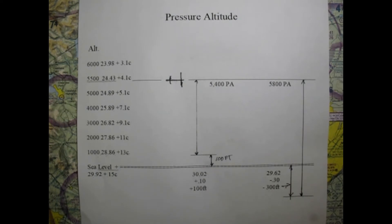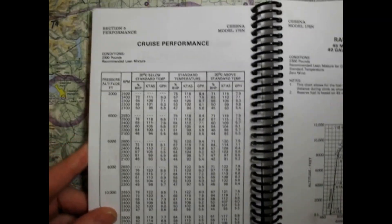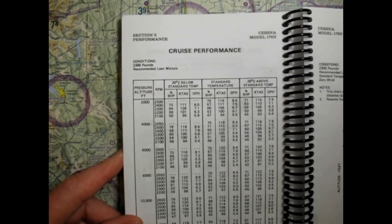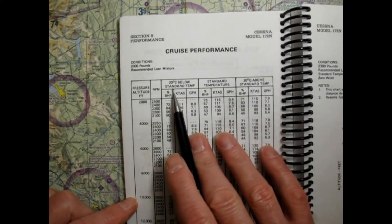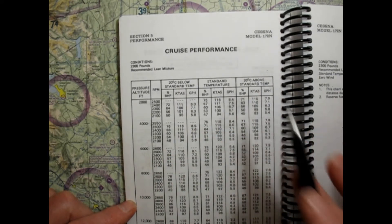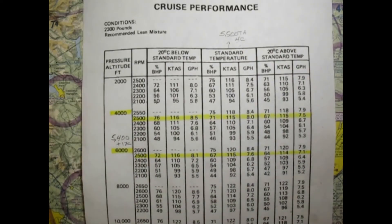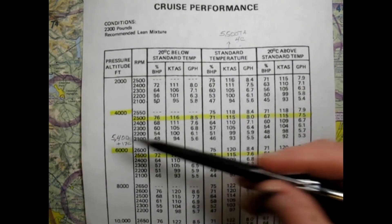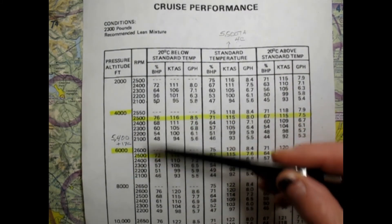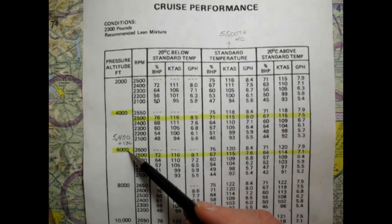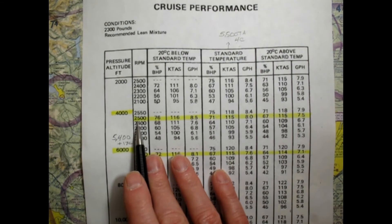Now let's get back to doing some calculations. Back to our pilot handbook, we go to cruise performance, which has pressure altitude listed along with standard temperature (15°C), 20 degrees below that, and 20 degrees above that. We're at 5,400 feet pressure altitude, which falls between 4,000 and 6,000 in the table. We've decided to cruise at 2,500 RPM.